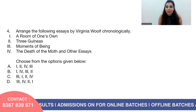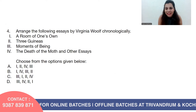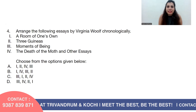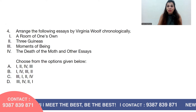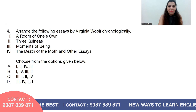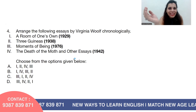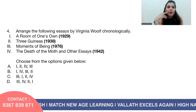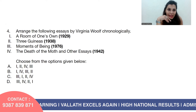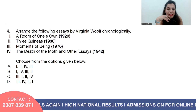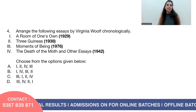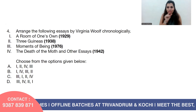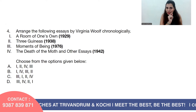Question number four: Arrange the following essays by Virginia Woolf chronologically. One, A Room of One's Own; two, Three Guineas; three, Moments of Being; and four, The Death of the Moth and Other Essays. The correct order is: A Room of One's Own (1929), Three Guineas (1938), The Death of the Moth and Other Essays (1942), and Moments of Being (1976). The answer is option A: one, two, four, three.